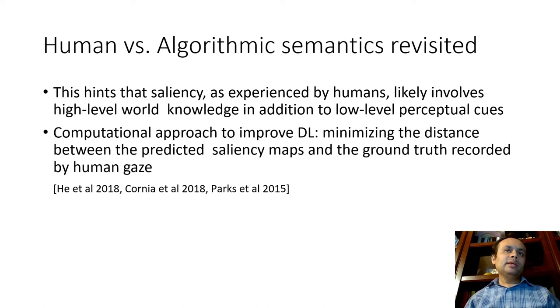So, this also hints at a potentially useful strategy. That is, saliency, at least as it is experienced by humans, likely involves high-level world knowledge in addition to some low-level perceptual cues. So, how is this useful? Well, it could be that we could use some of this information, maybe insights from neuroscience psychology. And maybe methods that minimize the distance between predictive saliency maps and the ground truth as recorded by human gaze. Maybe that can be used to create better models.